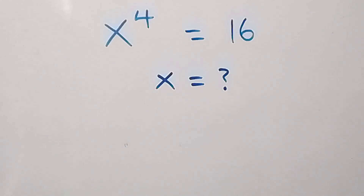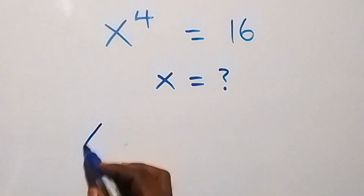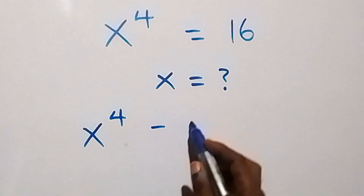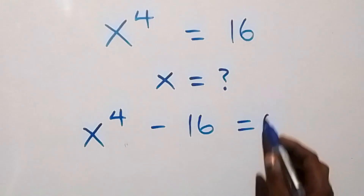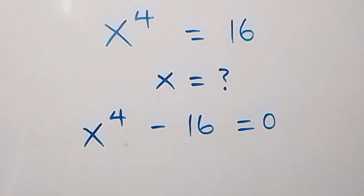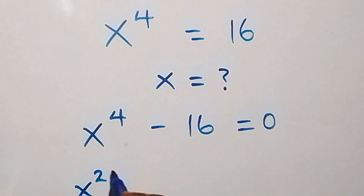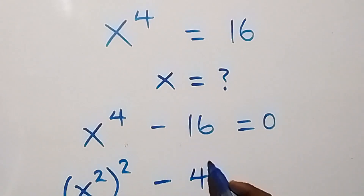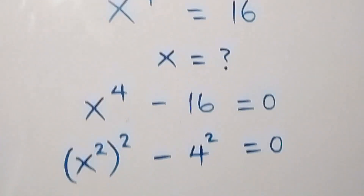Hello, you are welcome. How to solve for x: here in this problem, let's take 16 to this side and we have x raised to power 4 minus 16 equals to 0. From here, we can rewrite this as x squared, then squared, minus 4 squared, which equals to 0.